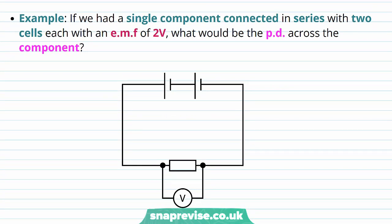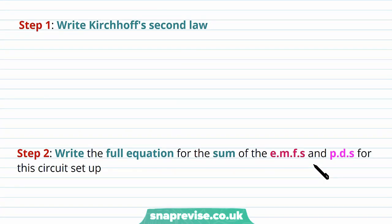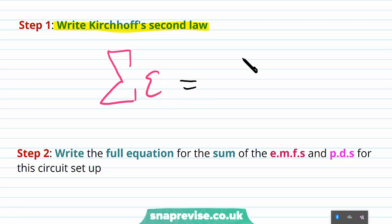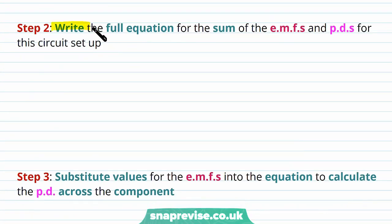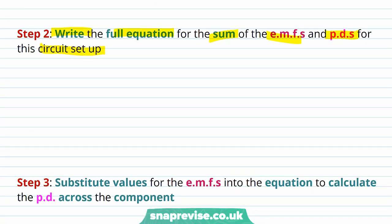Let's look at an example applying Kirchhoff's second law. If a single component is connected in series with two cells, each with an EMF of two volts, what is the potential difference across the component? We write down Kirchhoff's second law: the sum of the EMFs equals the sum of the potential differences. Since there is only one component, the sum of the potential differences is just the PD across that component.